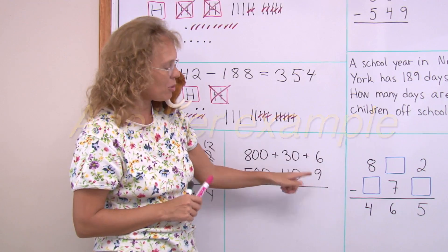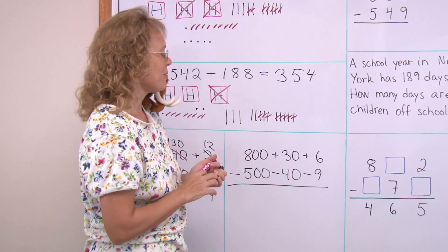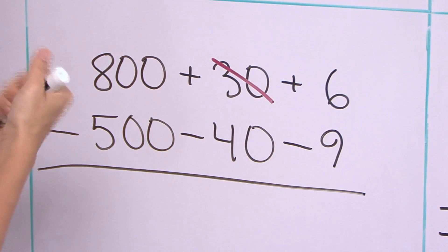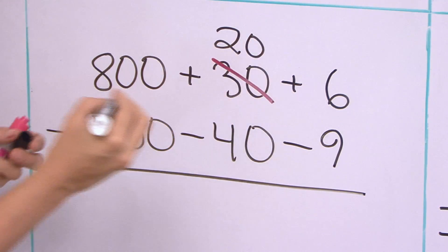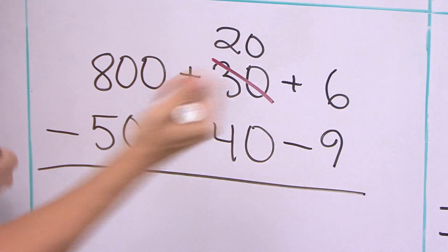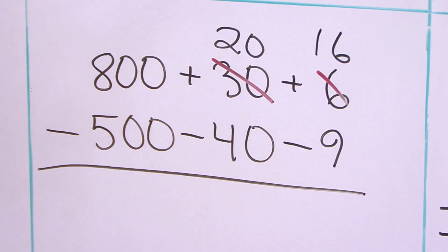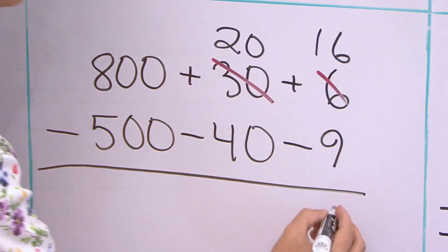First in the ones, six minus nine. Cannot do it, regroup. We will take one of the tens, so that leaves twenty here. We're taking a ten and moving it here, so we get sixteen here. Ten and six. Sixteen minus nine, seven.